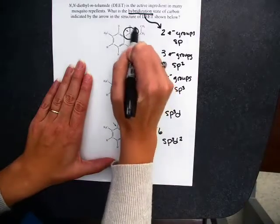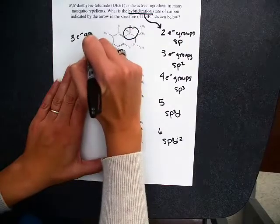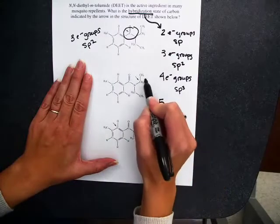So if I look at this first one, any bond counts as a group. So a double bond is the same as a single bond here. So there are three electron groups. That carbon is SP2 hybridized.